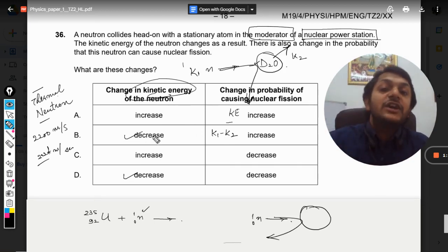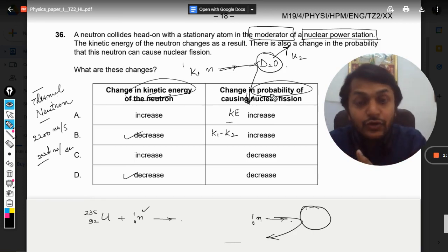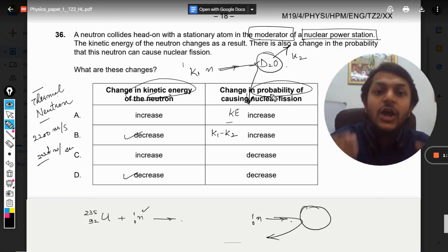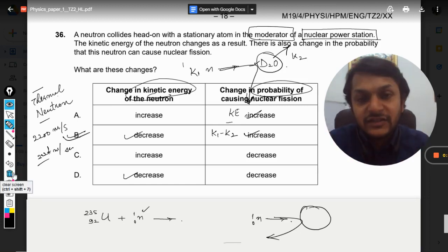Why have we decreased? Because if it decreases only then the fission reaction can take place. Now what else? Change in the probability of causing a nuclear fission. So as we all know that the thermal neutron is having higher probability of getting captured by uranium nuclei. So that is why it definitely increases. So our answer will be B for this question.